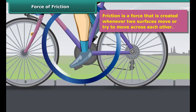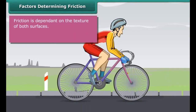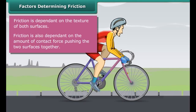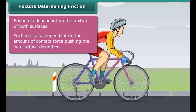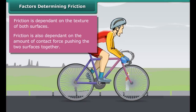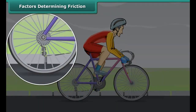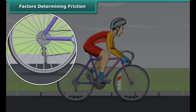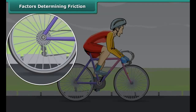Friction is a force that is created whenever two surfaces move or try to move across each other. Friction always opposes the motion or attempted motion of one surface across another. The force which resists the motion of a body while moving on a surface is called friction. Friction is dependent on the texture of both surfaces and also on the amount of contact force pushing the two surfaces together.